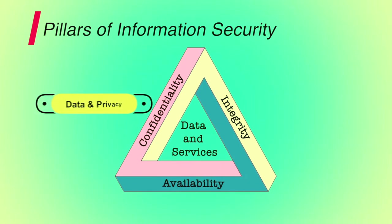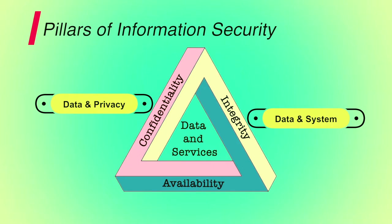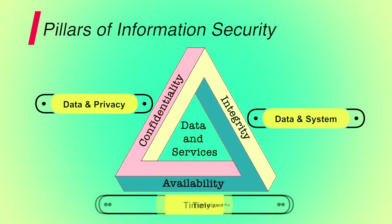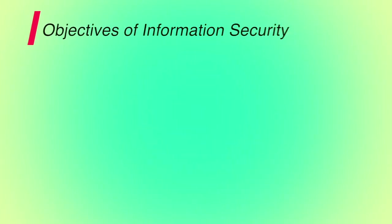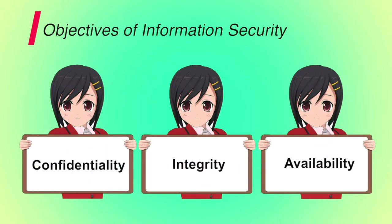Confidentiality covers both data confidentiality and privacy. Integrity covers both data and system integrity. And availability ensures timely and reliable access to and use of information. Confidentiality, integrity and availability are the three main objectives of information security.